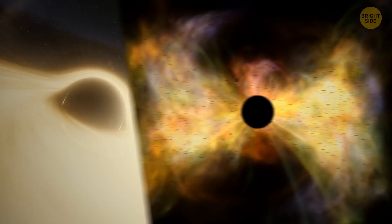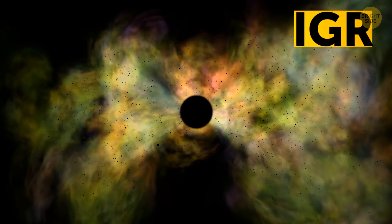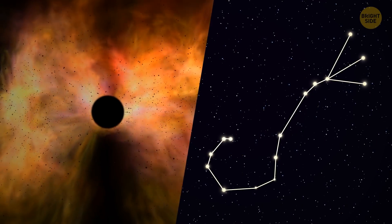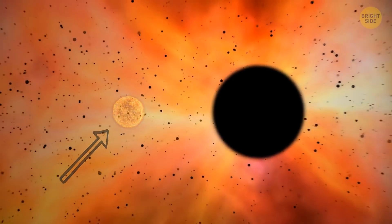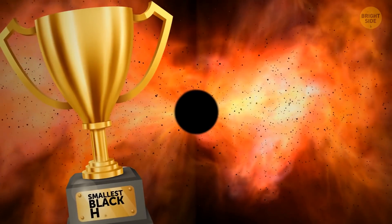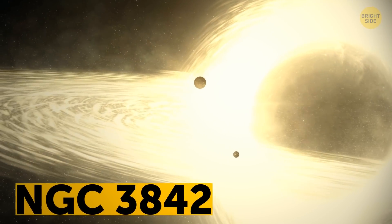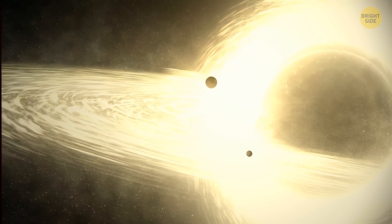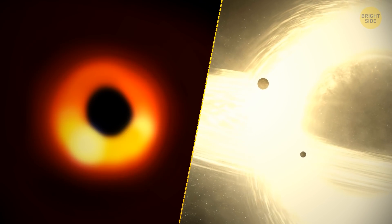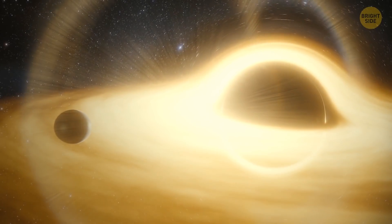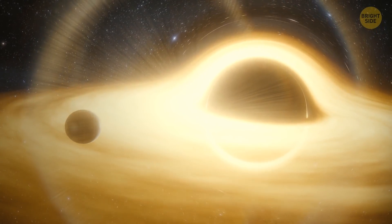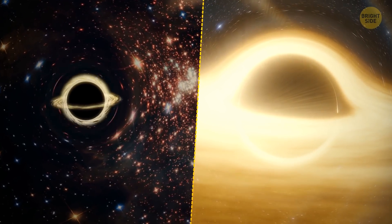Black holes are not always supermassive. IGR rests in the constellation Scorpius and is only 3 to 10 times more massive than the Sun, which probably makes it the smallest black hole discovered so far. NGC 3842, on the other hand, is something we picture when someone mentions a black hole. It's in a different galaxy and about 2,500 times as strong and massive as the black hole in the center of the Milky Way.